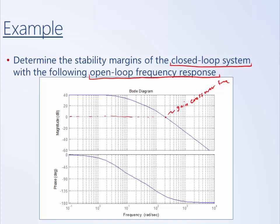Then we go down to the phase plot at that frequency, and we try to estimate how far the phase plot is from crossing minus 180 degrees. That distance is the phase margin. It's a little hard to see very exactly, but it looks like at that frequency the phase is approximately minus 155 degrees, and minus 155 is 25 degrees above minus 180.